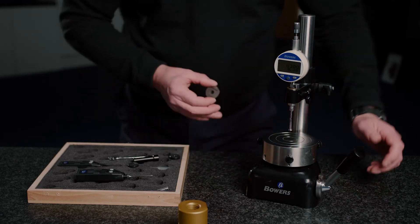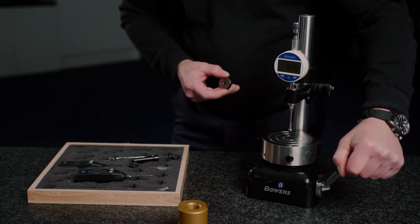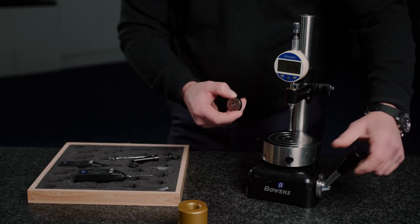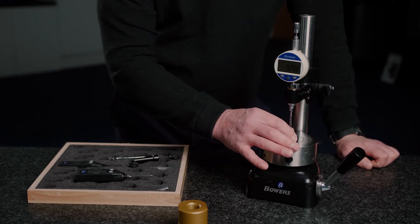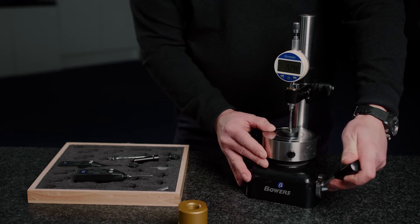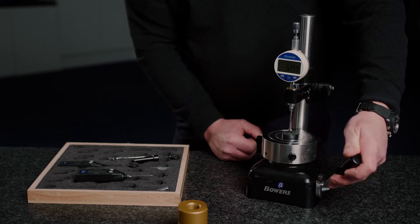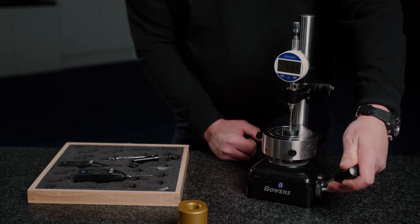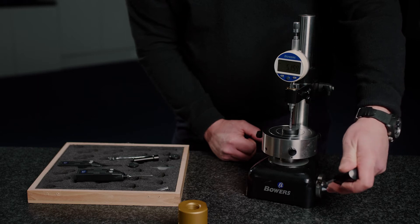So what that allows us to do is raise and lower the table, maintaining this perpendicularity. So if I put a part on there, we would allow the table to align the part and guide the gauge into the bore.